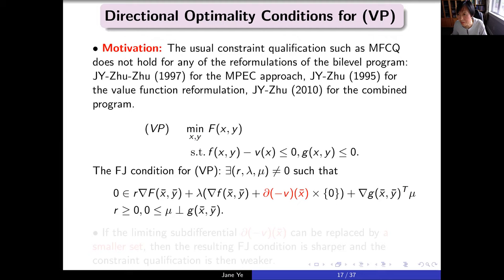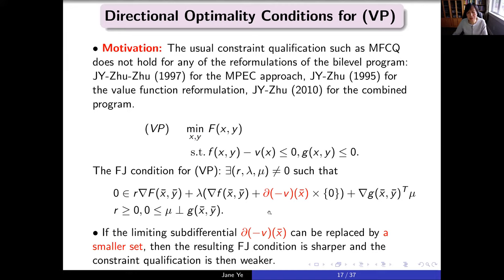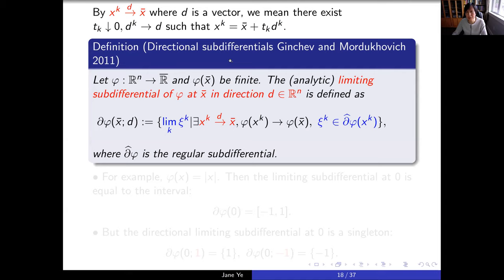A question from the audience: is the value function usually the bad guy? The answer is that it's not that bad — if the lower level's constraint satisfies MFCQ at the solution, then the value function is continuous. So you do need to assume MFCQ for the lower level.